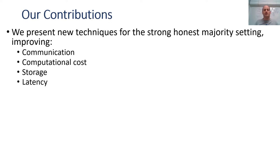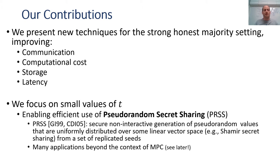In this work, we present new techniques for the strong honest majority setting, improving communication, computational cost, storage, and latency. All of our techniques are based on pseudorandom secret sharing (PRSS), which allows secure non-interactive generation of pseudorandom Shamir secret sharings from a set of replicated seeds distributed across the parties. While this method requires no communication, the computational cost grows very fast with the number of parties, making it only practical for small values of T. Nevertheless, it has many applications beyond MPC.